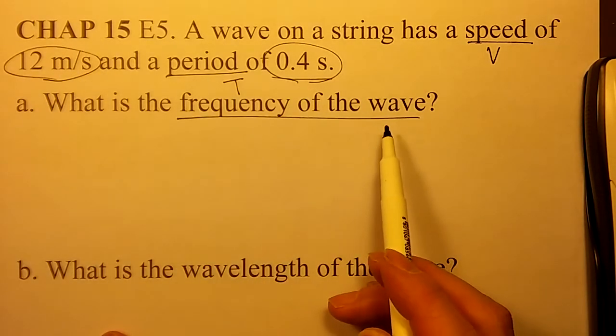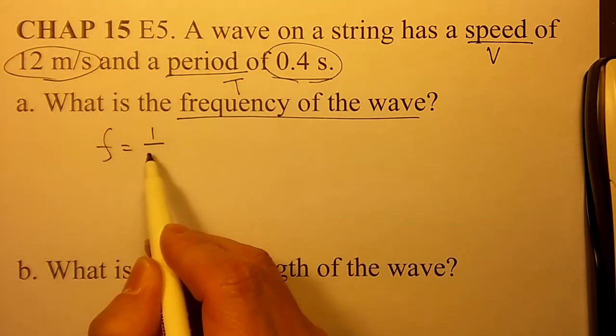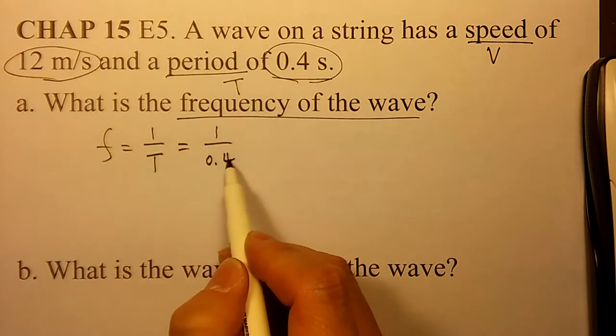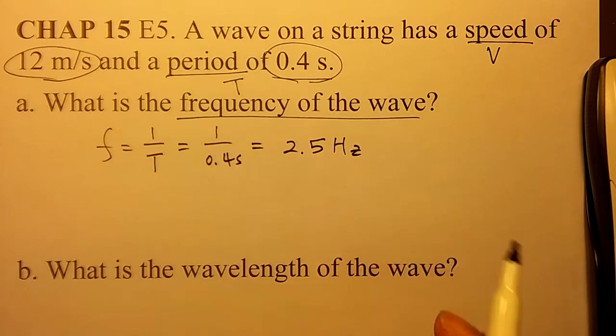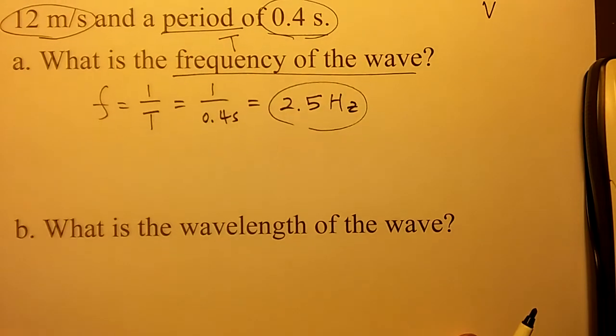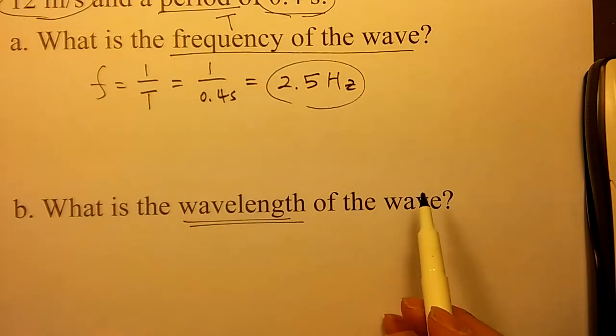What is the frequency of the wave? The frequency you can find using 1 over T. So 1 over 0.4 seconds becomes 2.5 Hertz as your frequency for this wave. And then what is the wavelength of this wave?